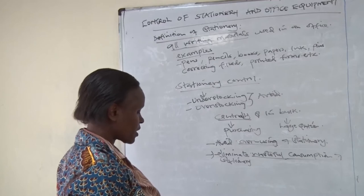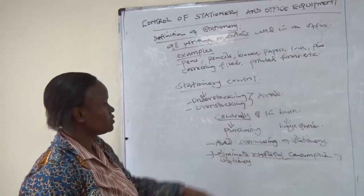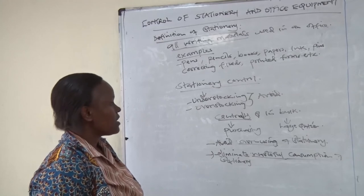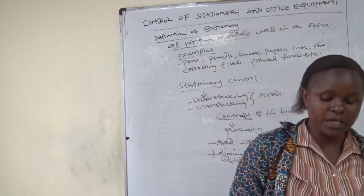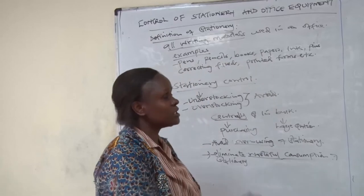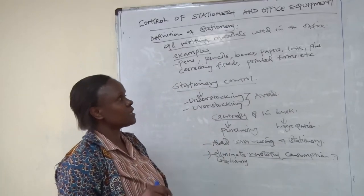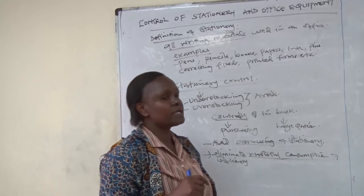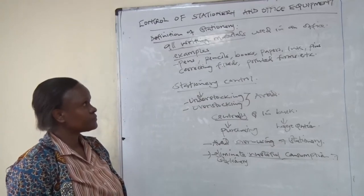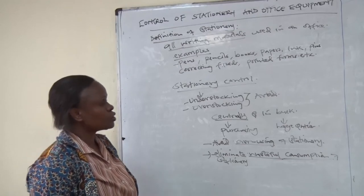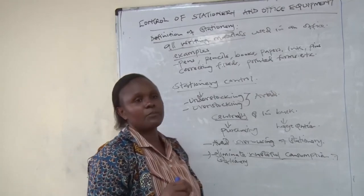I would like us to look at how you are supposed to purchase stationery. We have two types of purchasing: centralized and decentralized. When we say centralized, we mean all stationery is bought and kept in one point — one office is appointed to do the purchasing. The procurement department can be in charge of purchasing all stationery. Stationery, which we call consumable goods, is bought by only one office, and then they supply the other offices.